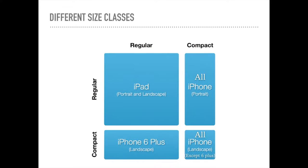The third case on the bottom left is compact regular — compact height and regular width. This size class includes only plus category devices in landscape orientation: iPhone 6 Plus, 6s Plus, and 7 Plus. The last case is regular regular — height is regular and width is regular — which covers all iPads in both portrait and landscape orientations.